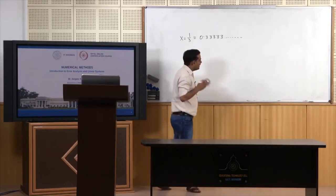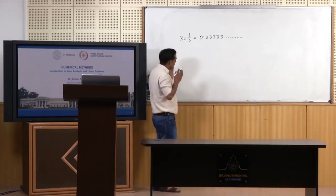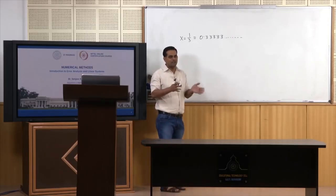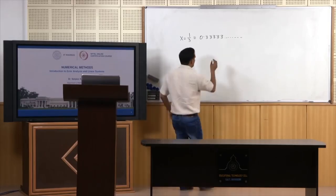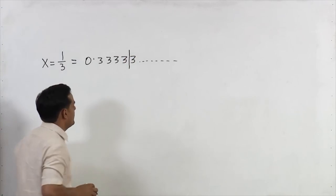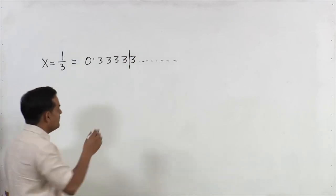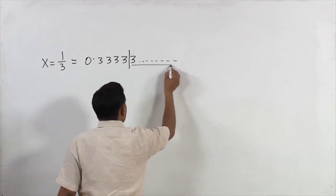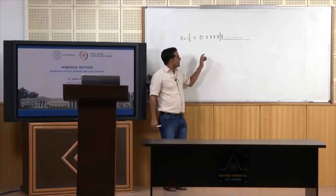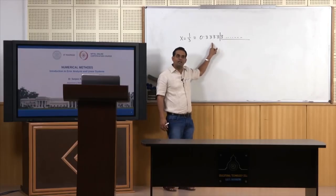What happens is we need to cut down this number somewhere after some fixed decimal places. For example, if I cut down this number after 4 decimal places, this portion after that will be ignored, and hence we are introducing an error in our computation.